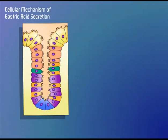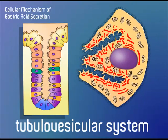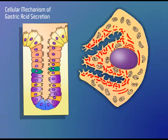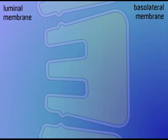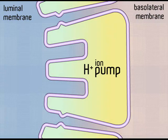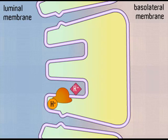The cytoplasm of unstimulated parietal cells contains numerous tubules and vesicles, together called the tubulo-vesicular system. The membranes of the tubulo-vesicles contain transport proteins responsible for secretion of hydrochloric acid into the lumen. When parietal cells are stimulated, tubulo-vesicular membranes fuse with the plasma membrane of the secretory canaliculi, increasing HCl pumping sites at the luminal surface via the hydrogen-potassium ATPase pump, which exchanges hydrogen for potassium.